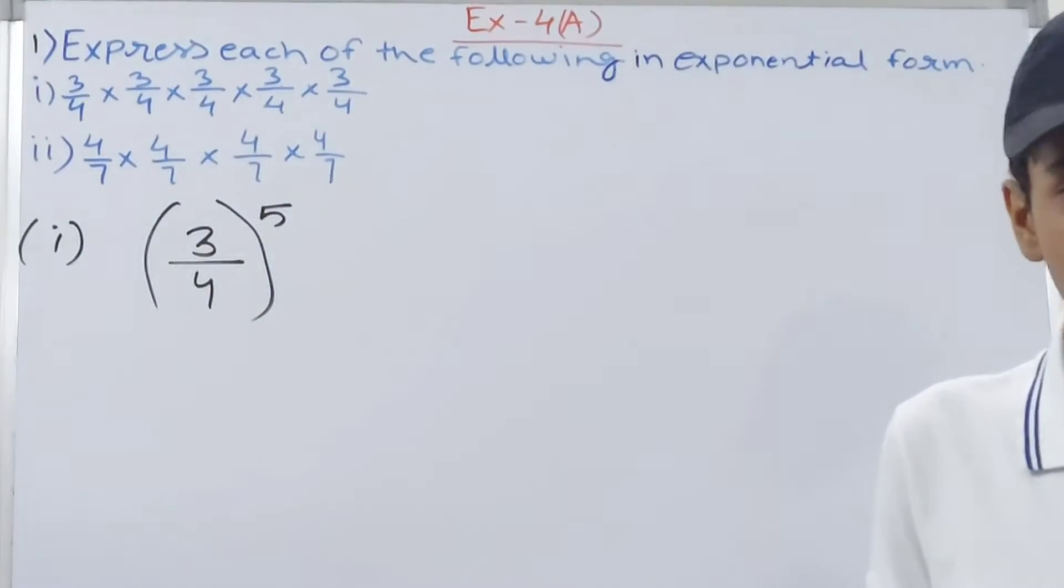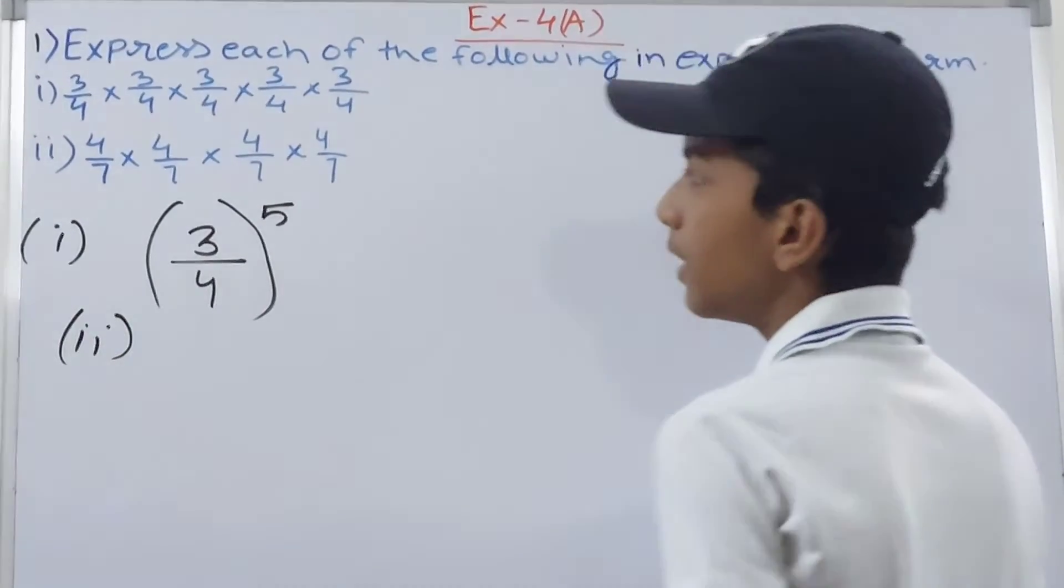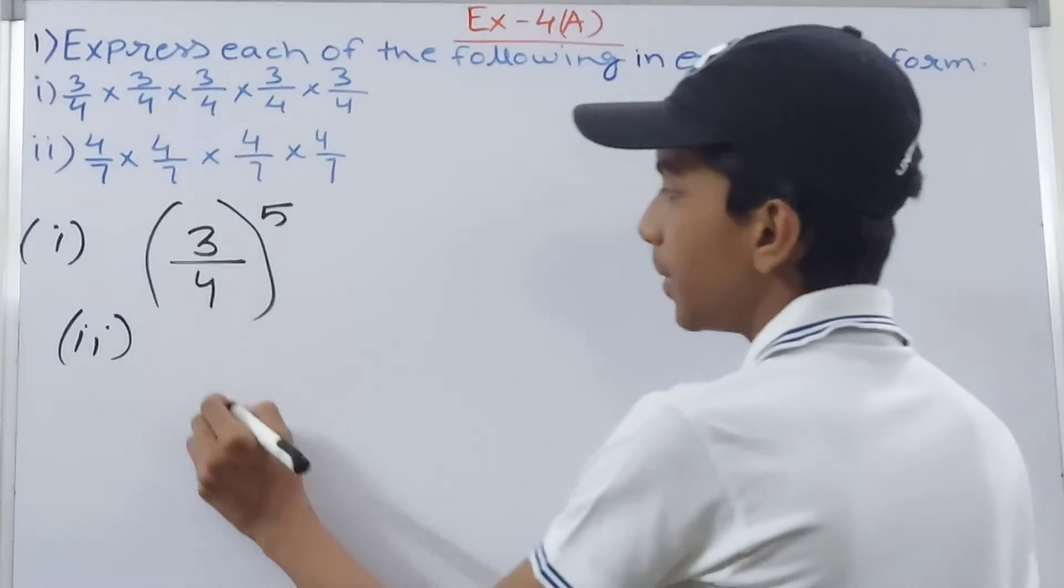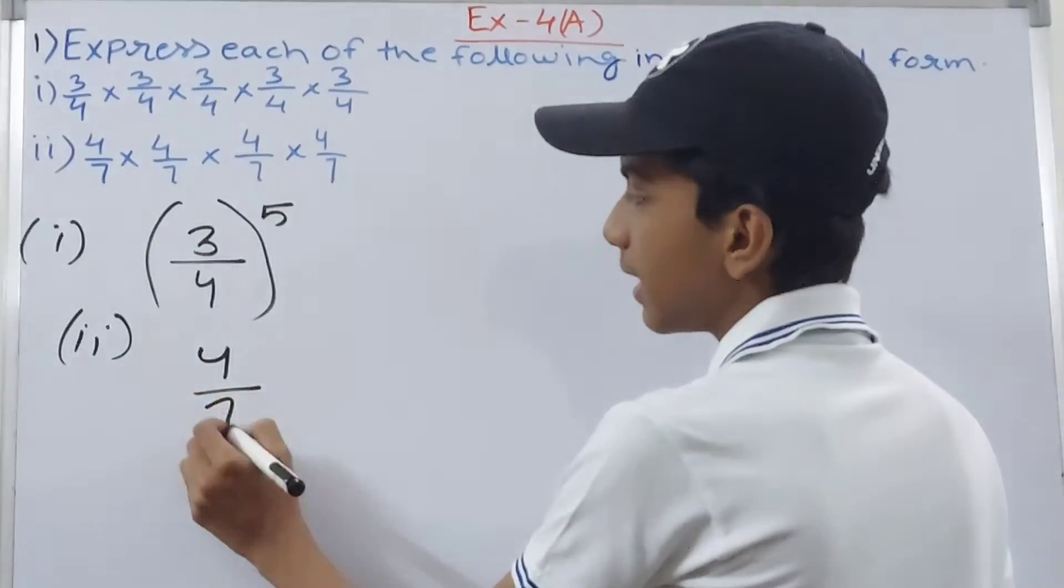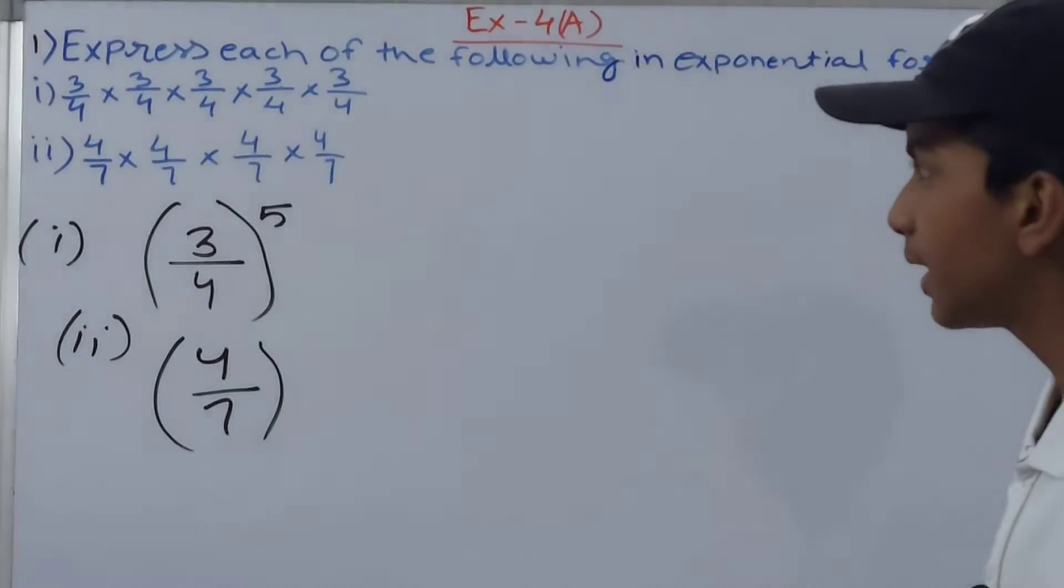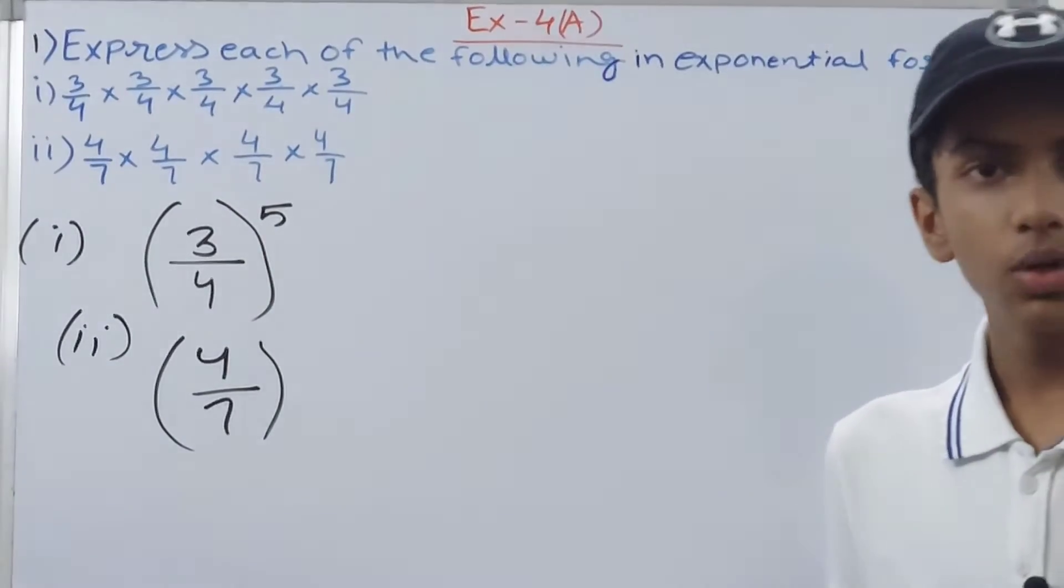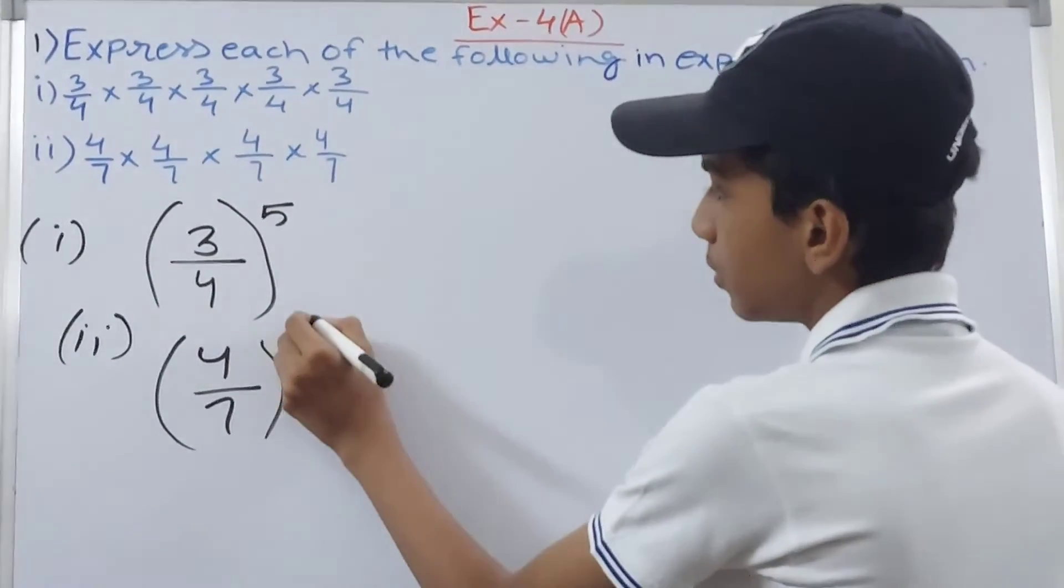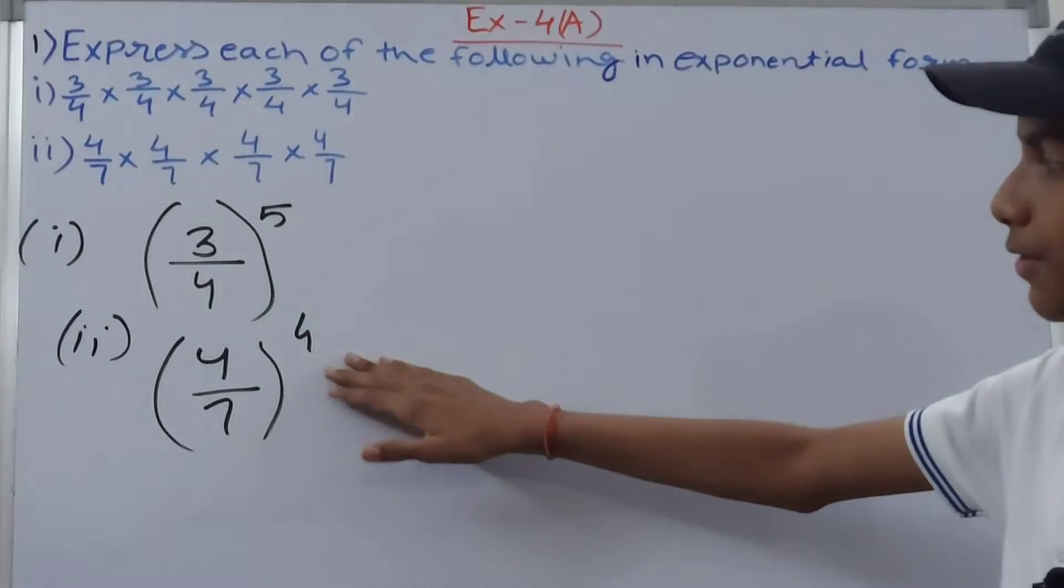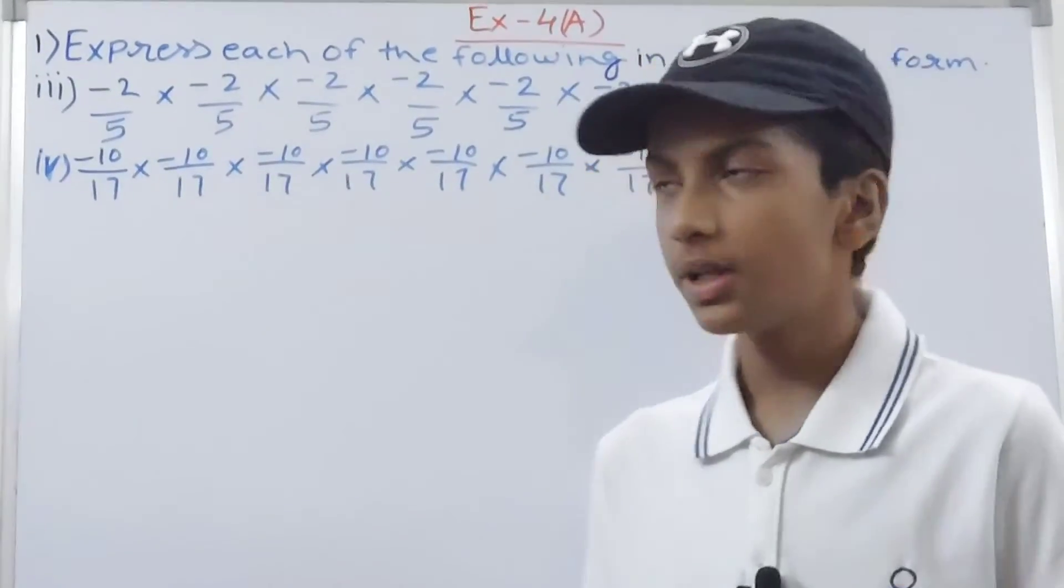Now the second one: we have 4 upon 7. So 4 upon 7 is our base, so you can write it like this and put it in brackets because we always put fractions in brackets. Count: 1, 2, 3, and 4 - four times. So our exponent becomes 4. So 4 upon 7 to the power 4 is the answer of the second one.